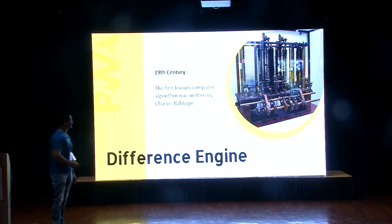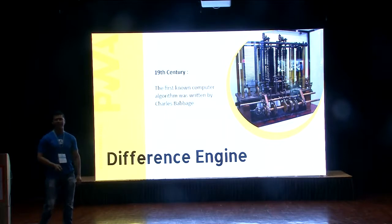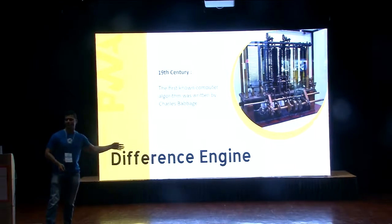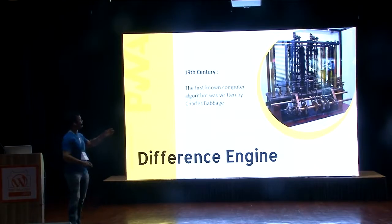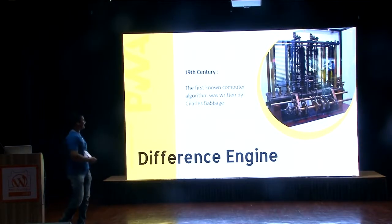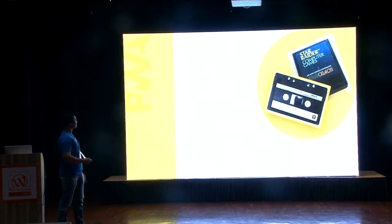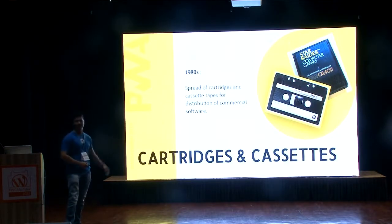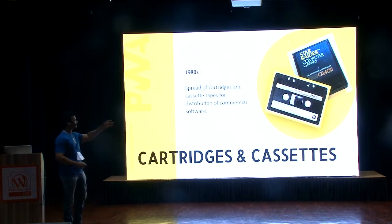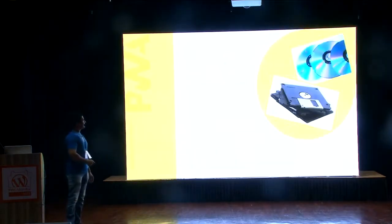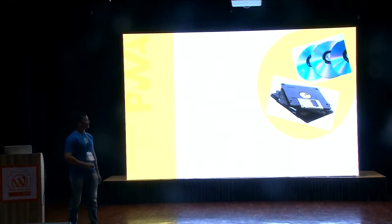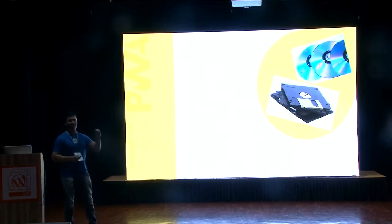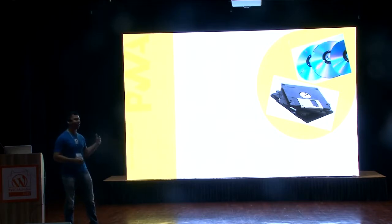It's the first known computer algorithm, which was written by Charles Babbage. You must be wondering why we are talking about this — this is about progressive web apps. The idea is that this is how computers were earlier. And then later on, you have the spread of cartridges and cassette tapes for distribution of commercial software. You remember the old days when you used to use these cassettes.